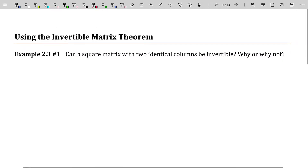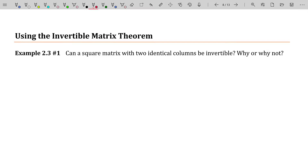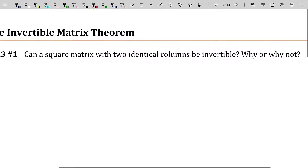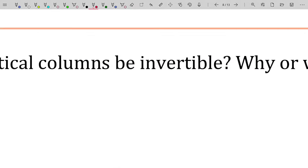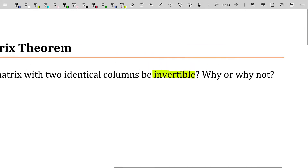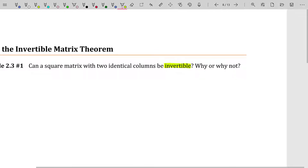This first example is very simple: can a square matrix with two identical columns be invertible? Why or why not? I want to demonstrate the proper way to think about the answer to this question and the proper way to phrase it. The first thing I'm going to do is hop back to the Invertible Matrix Theorem because we're talking about invertibility here, and that is key to this whole conversation.